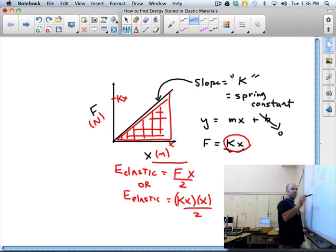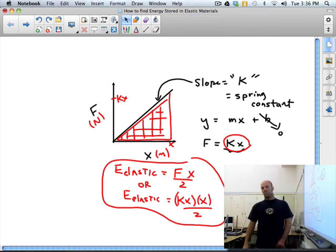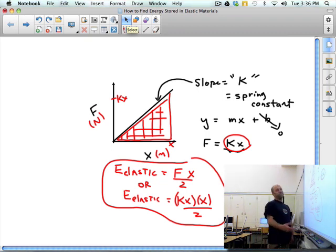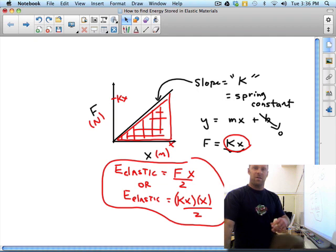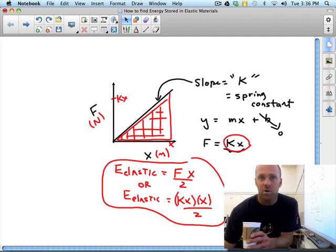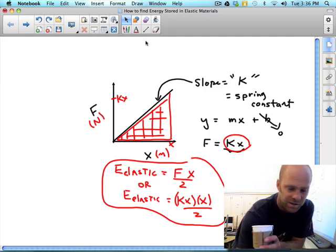These are our equations for elastic energy stored in a spring, rubber band, trampoline, bungee cord. All you really got to do is draw an F X graph and find the area of that graph. So there you go, quick review of how to find energy stored in an elastic material.